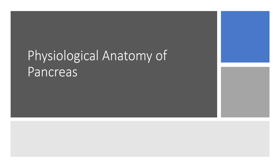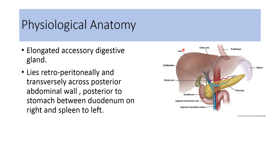Physiological anatomy of the pancreas includes information about various structures in the pancreas that are useful in physiological functions. Pancreas is an elongated accessory digestive gland. It lies retroperitoneally and transversely across the posterior abdominal wall, posterior to the stomach, and between duodenum to the right and spleen to the left.